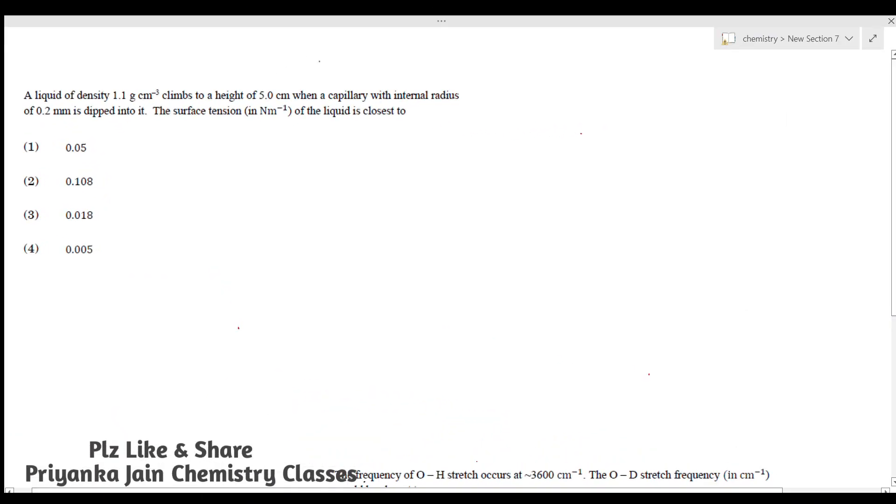Hi everyone, welcome to chemistry classes. I am Priyanka Jain and you are watching the test series videos for the incoming CSIR NET exam. This question is from December 2019 question paper. The question: A liquid of density 1.1 g/cm³ climbs to a height of 5 cm when a capillary with internal radius of 0.2 mm is dipped into it. The surface tension of the liquid is closest to... We have to find the surface tension in units of N/m.